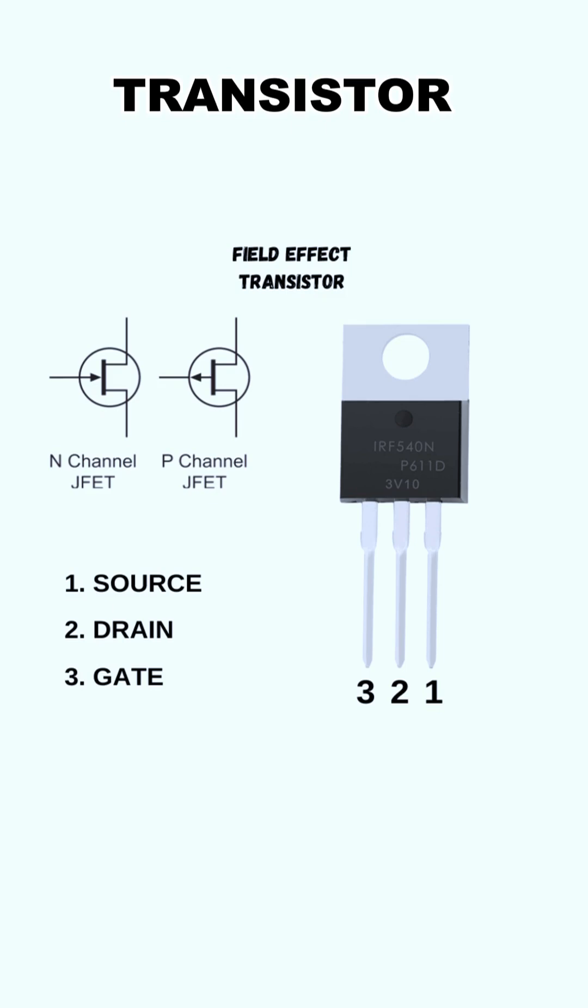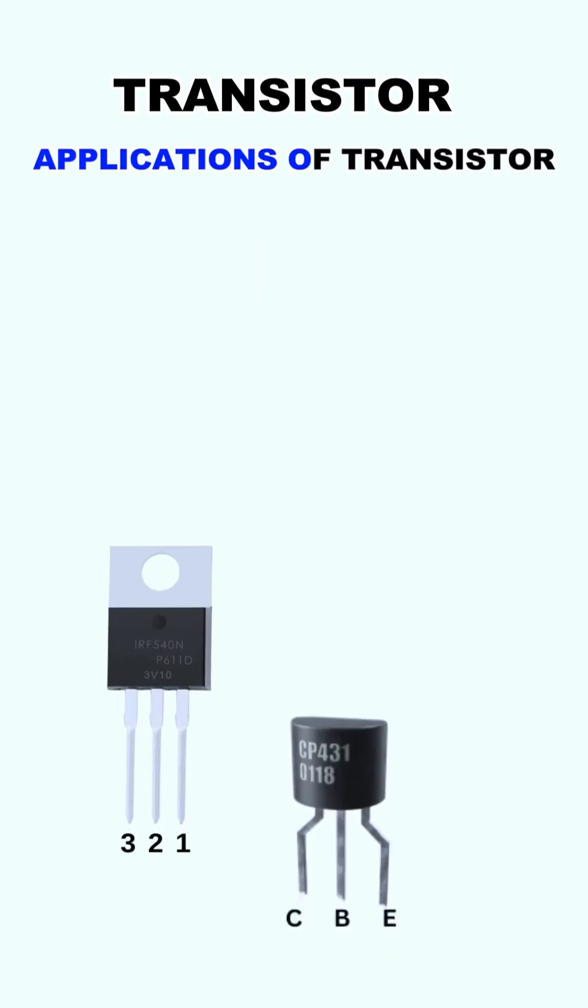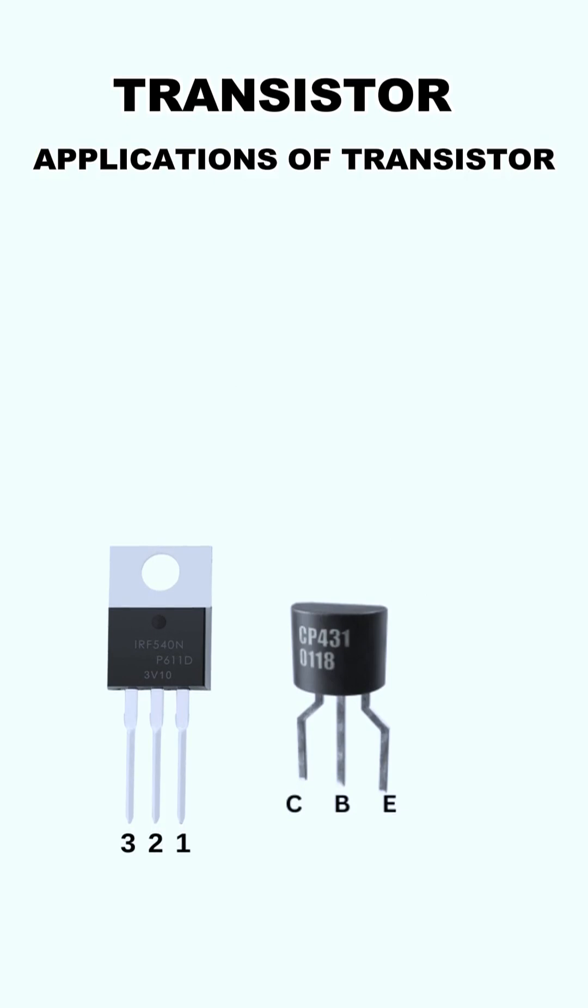There are various applications of transistors. 1. The core use of transistors includes switching applications, or both amplification and switching. 2. There is a kind of transistor that produces current flow depending on the amount of light shined upon it. Those are known as phototransistors.